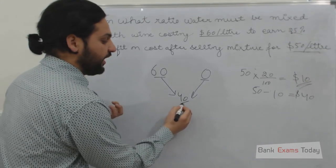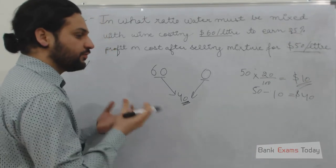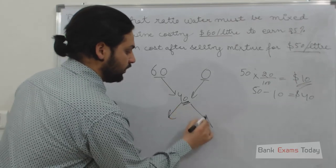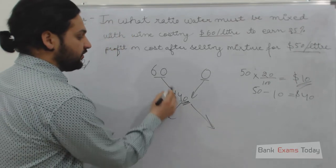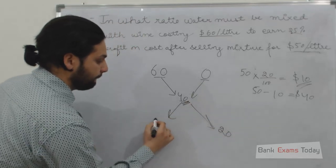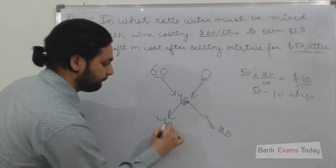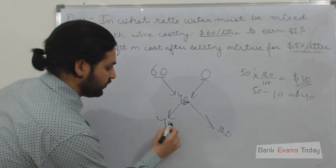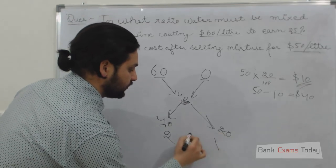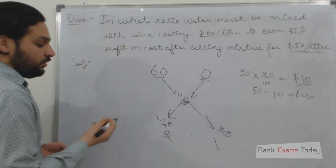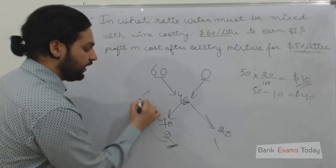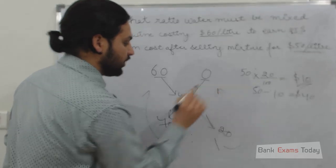Simply deduct 40 from 60, and deduct 0 from 40. So the ratio is 2 to 1 — the mixture contains 2 parts of wine and 1 part of water.